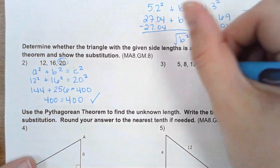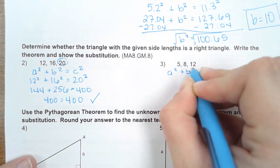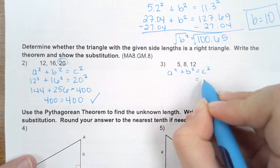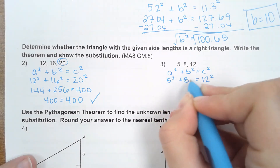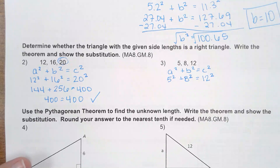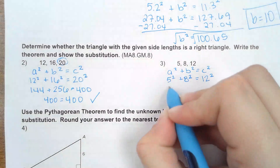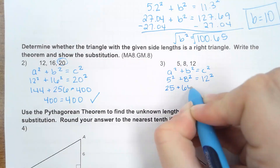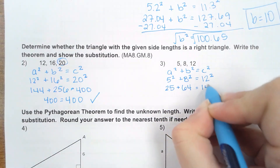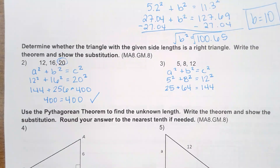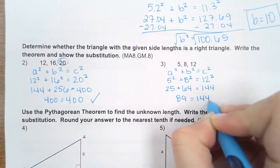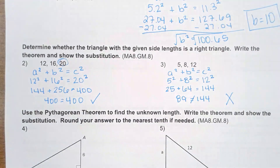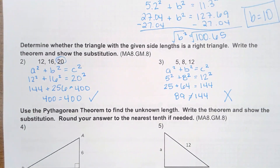We're going to do the same process with the next one. So a² + b² = c². 12 has to be plugged in for c because that's the largest number. Then 5 and 8 are going to be the legs. So 5² = 25, 8² = 64, and 12² = 144. Add 25 and 64 to get 89. Since 89 does not equal 144, this means it is not a true statement and they are not going to form a right triangle.